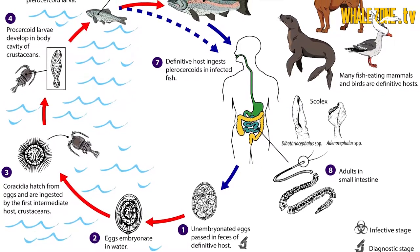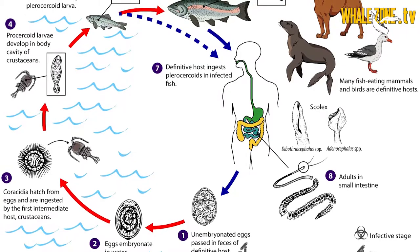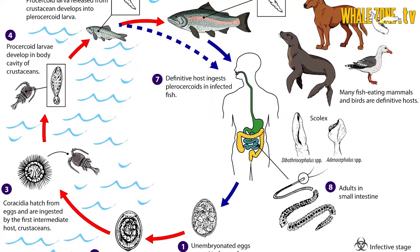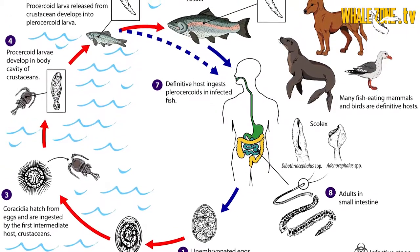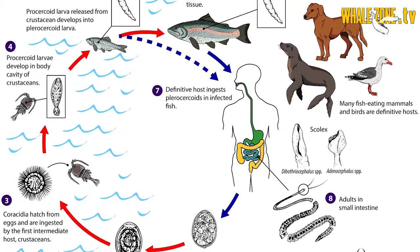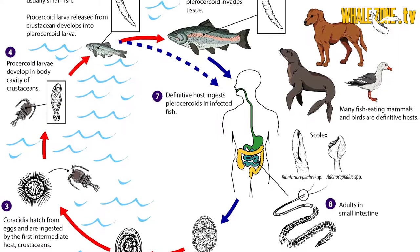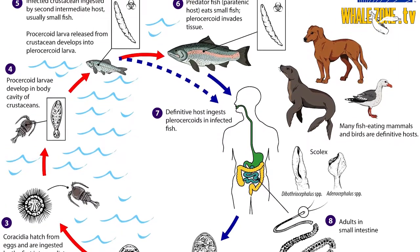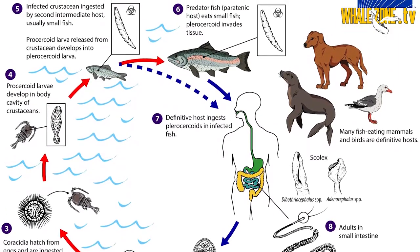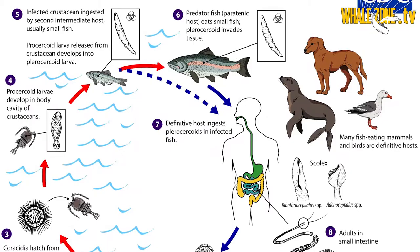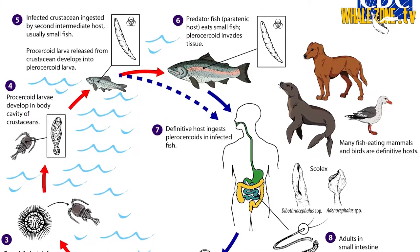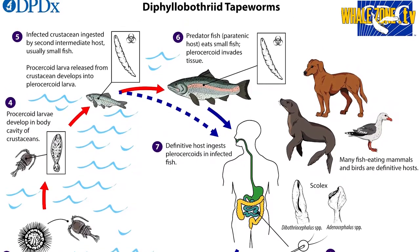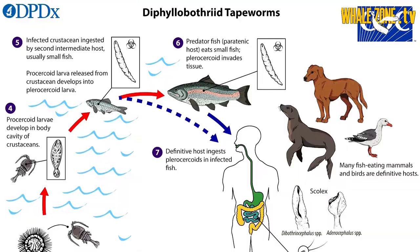Like other species of parasites of terrestrial mammals, these parasites of whales and dolphins also have a complex life cycle. This means that they go through several transformations until they reach the final host, and normally they have one or more intermediate hosts.